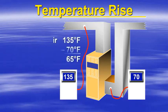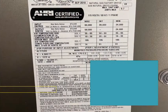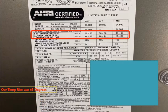Taking our return air temperature and our supply air temperature - in this example we have a 70 degree return air and 135 degree discharge air. We take these two numbers and subtract them to get our temperature rise of 65 degrees.